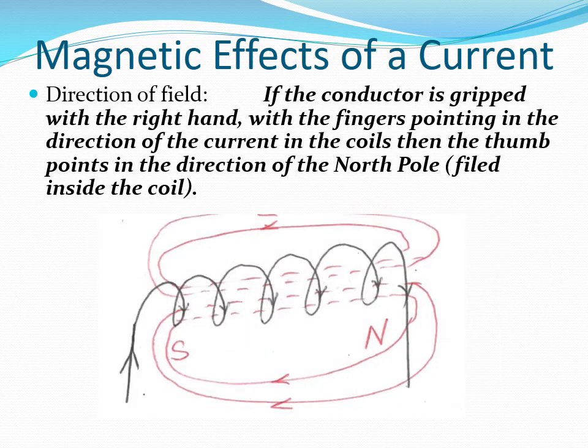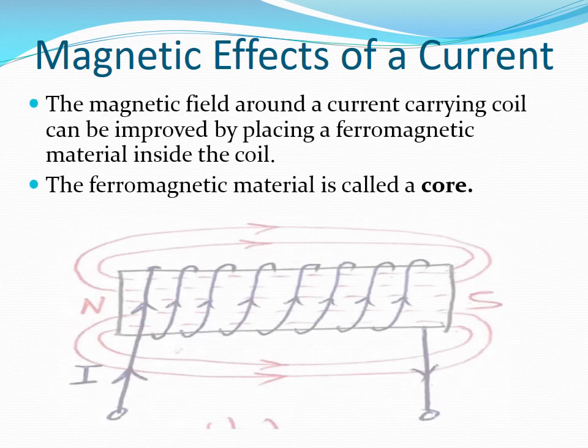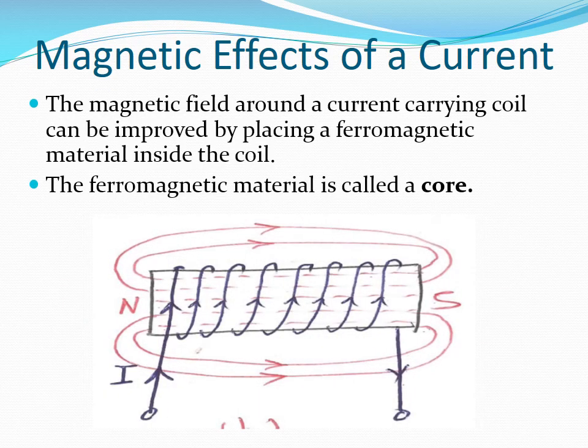This diagram further illustrates the nature, distribution, and direction of the field around a current-carrying coil. The magnetic field established by a current-carrying coil can be improved by placing a ferromagnetic material inside the coil. Because a ferromagnetic material allows magnetic flux to be easily established in it, it results in an increased number of flux lines. A ferromagnetic material placed inside a current-carrying coil is called a core.